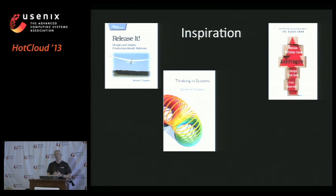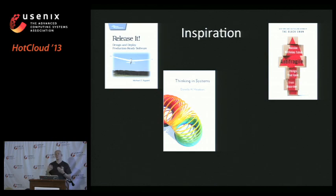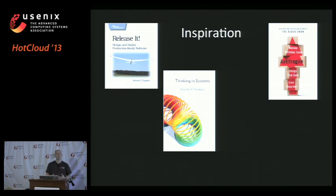'Anti-Fragile' came out last year. The concept is: say you work out one day — the next day you hurt, but the day after that you're a bit stronger than before. That's the biological equivalent of anti-fragile: you damage something slightly, exercise it, and it becomes stronger. From our point of view, we deliberately introduce damage and brokenness into our systems to prove that the system as a whole is resilient to that.